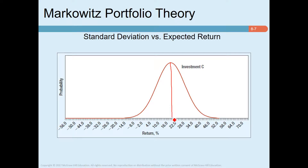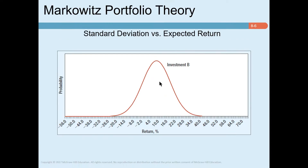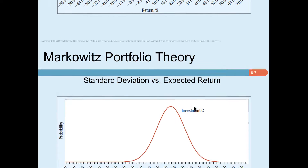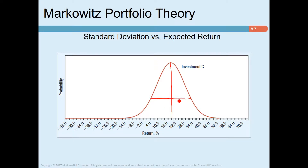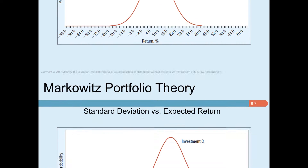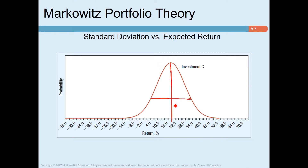Investment C has an expected return of 20 percent with the same spread as Investment B. Since Investment C has the same riskiness as B but a higher expected return, investors would prefer C over B. The key point is that if a return series is normally distributed, investors only consider standard deviation and expected return: given the same risk, prefer higher return; given the same return, prefer lower risk.